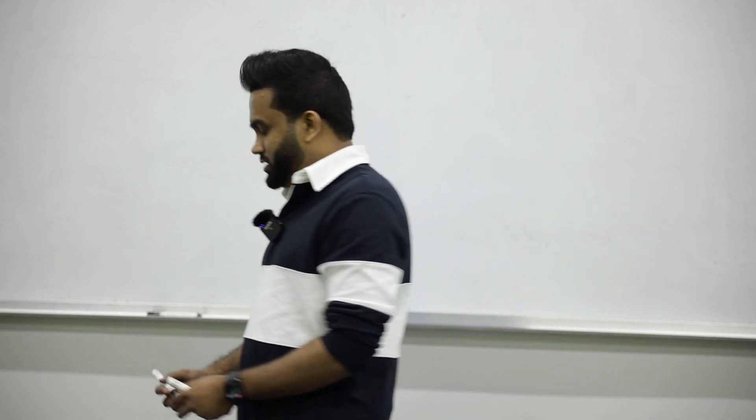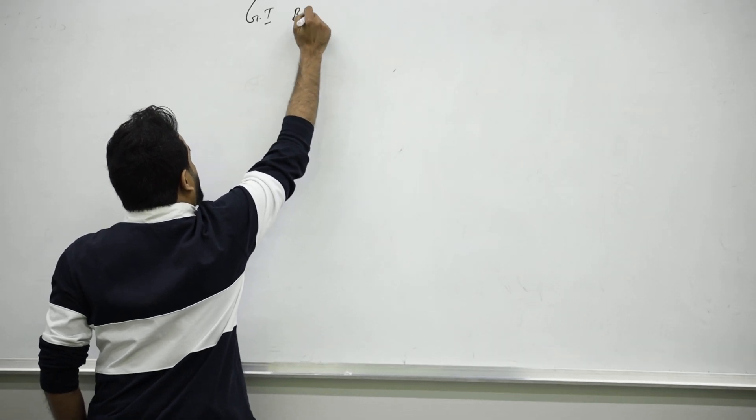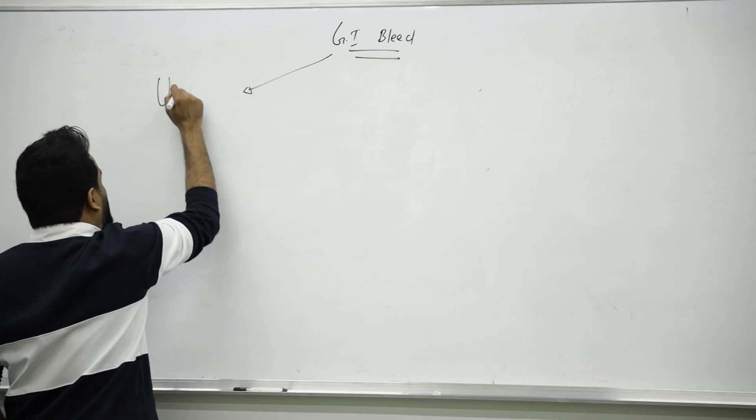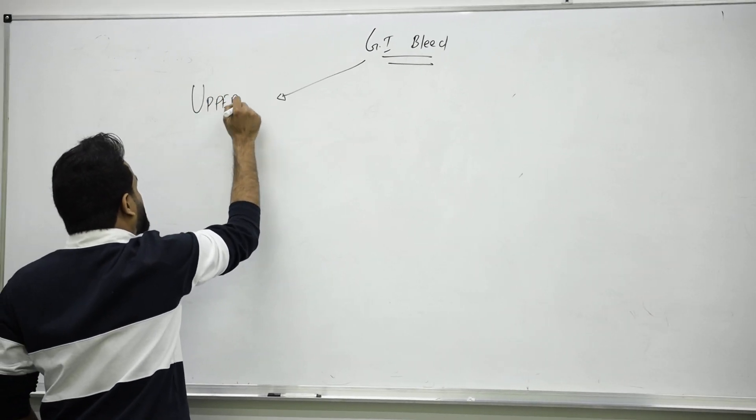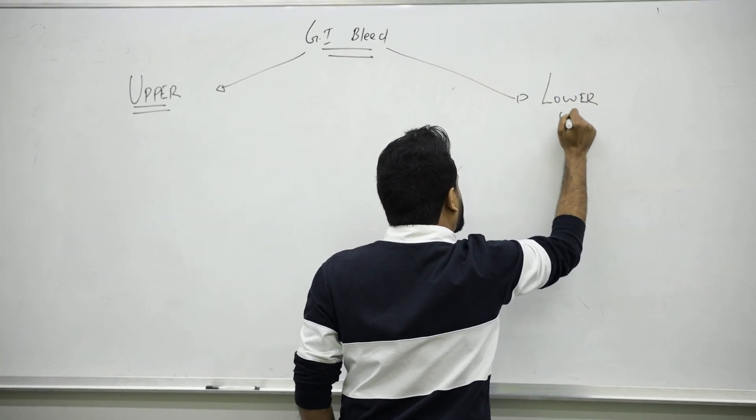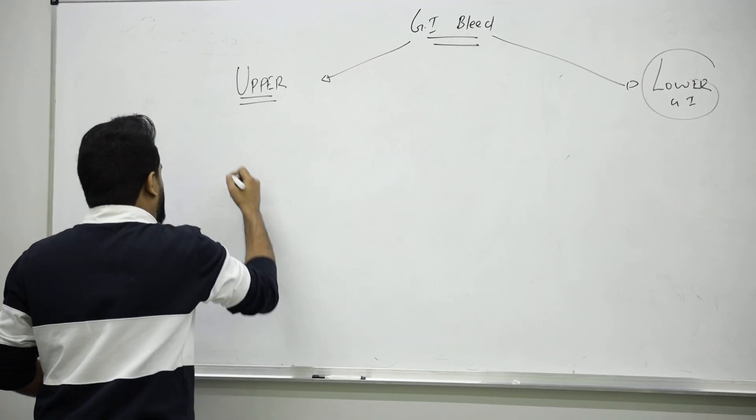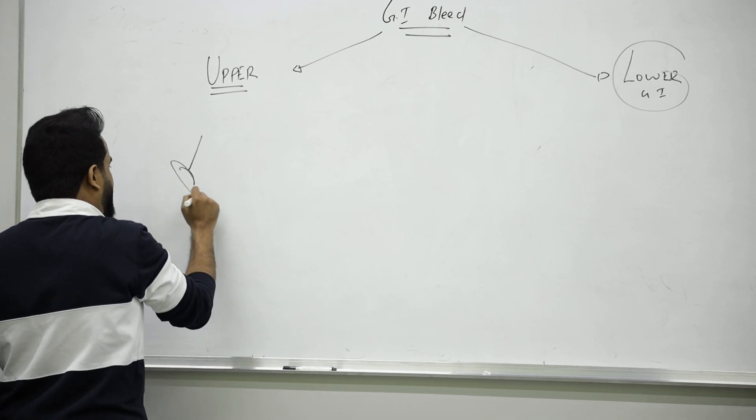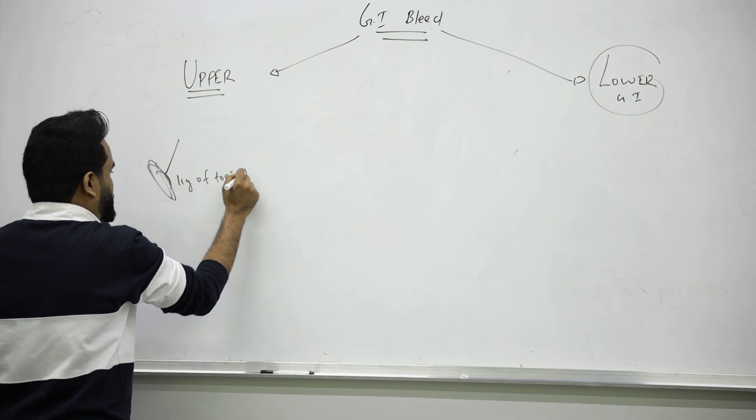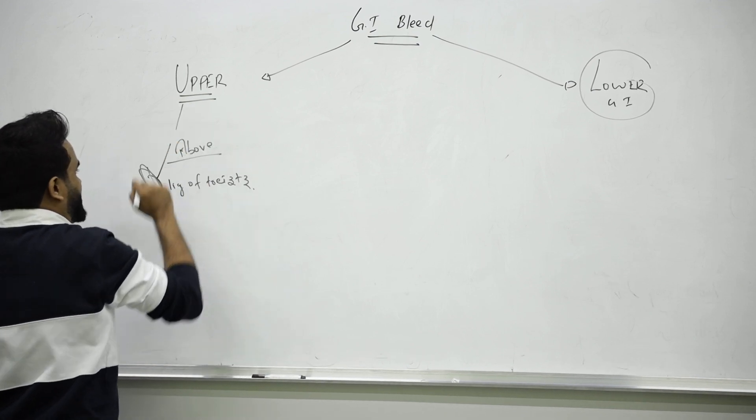Let's talk about GI bleed, gastrointestinal bleed. You can easily classify this as upper GI bleed or lower GI bleed. Upper GI bleed anatomically is everything above the ligament of Treitz in the duodenum. Anything above this ligament that's injured will be upper.